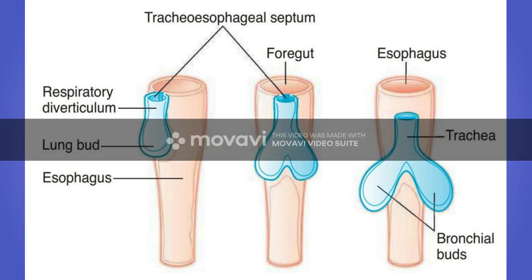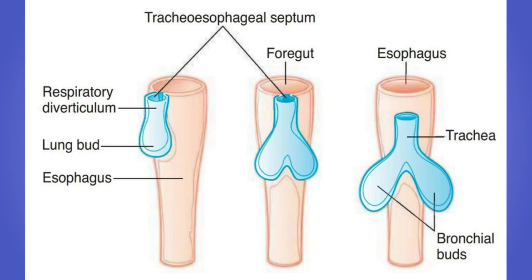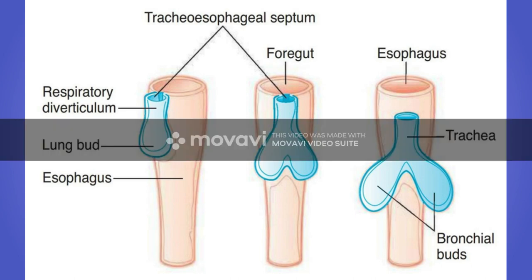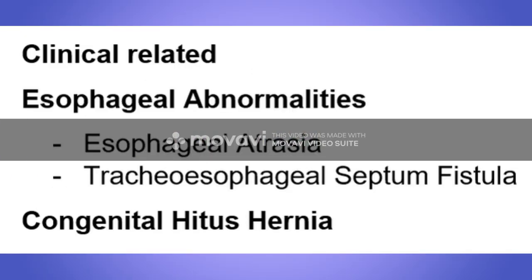As we can see in the picture, during the fourth week the respiratory diverticulum appears as a bud-like structure. Then the tracheoesophageal septum divides it into two portions — the ventral portion, which develops into the trachea, and the dorsal portion, which develops into the esophagus.